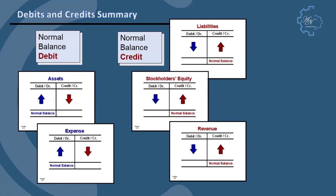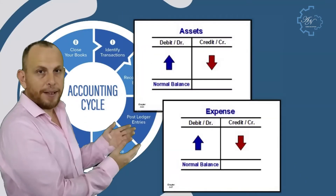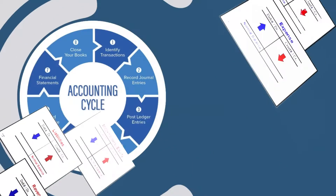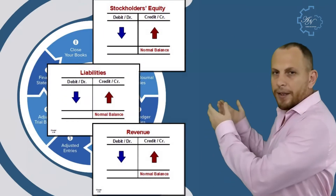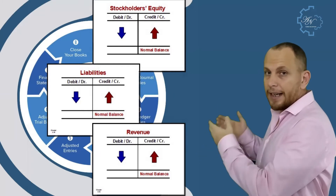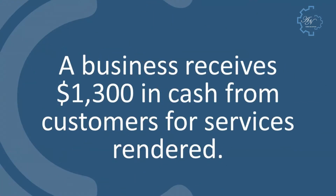In this illustration we'll see how accounts are affected by debits and credits. Assets and expenses have a normal debit balance, so they increase with a debit and decrease with a credit. Equity, liabilities, and revenue have a normal credit balance, so they increase with a credit and decrease with a debit.